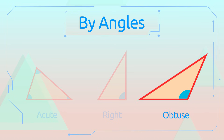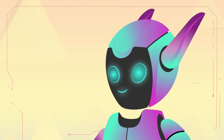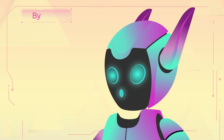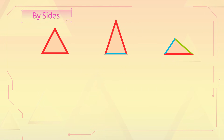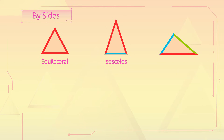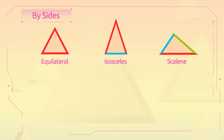Let's recap! Classifying triangles depending on their sides, we have: the equilateral triangle, in which all sides are equal; the isosceles triangle, in which two sides are equal; and the scalene triangle, in which all sides are different.